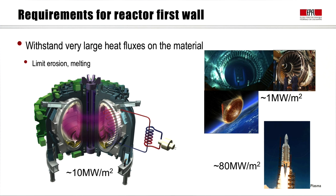First of all, the reactor first wall has to withstand very large heat fluxes on the material. Erosion has to be very limited and there has to be no melting. We have seen that we need about 5 to over 10 MW per square meter in a reactor.